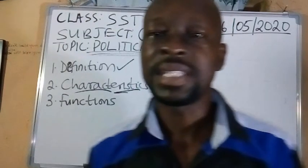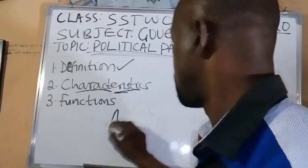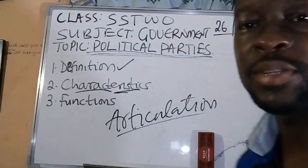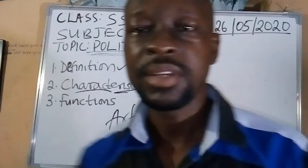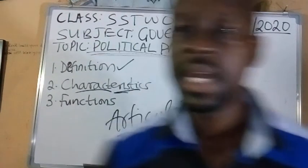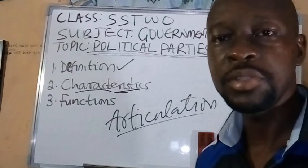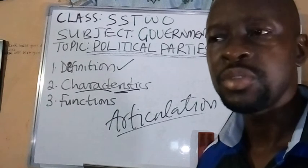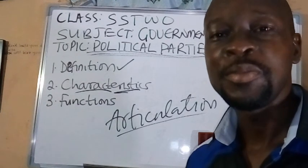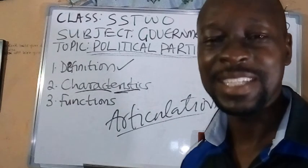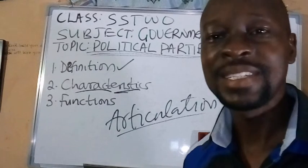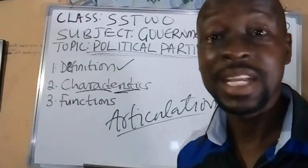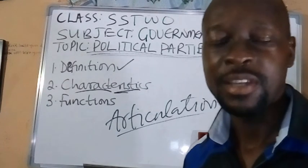The next function is interest articulation. Interest articulation means it is the duty and function of political parties to express the views and interests of the public and carry them to the ears of the government, so government will know what the people are asking for. They articulate through writing, press releases, discussions on the media, and every other legal means available — articulating the interest of the entire society.